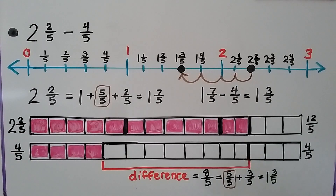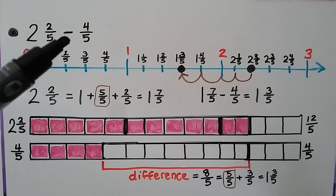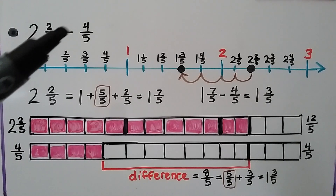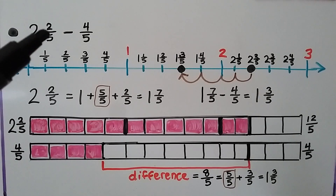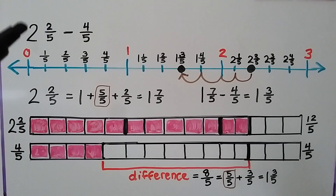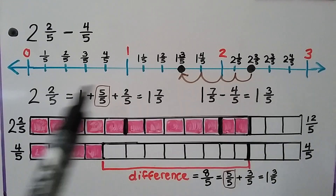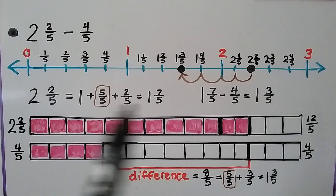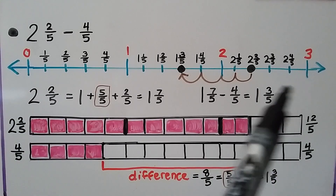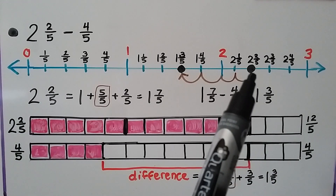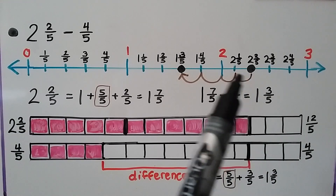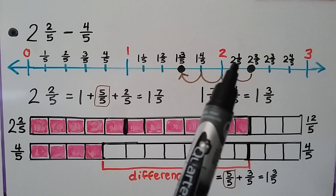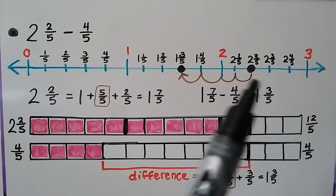It will equal 2 and 2 thirds. Here we have 2 and 2 fifths minus 4 fifths. We can't do 2 minus 4, so we need to rename this 2. Looking at a number line going from 0 to 3, we can see where 2 and 2 fifths is: here's 2, 2 and 1 fifth, 2 and 2 fifths.